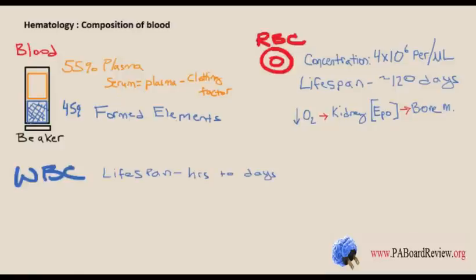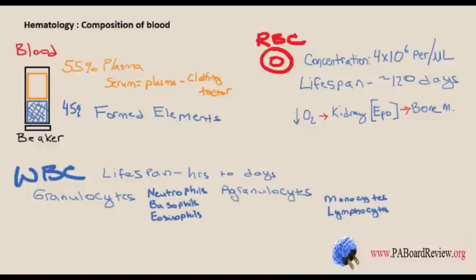White blood cells have a lifespan of hours to days. There are two types: granulocytes and agranulocytes. Granulocytes have vesicles containing enzymes or other chemicals; agranulocytes are those cells without the vesicles. The concentration is about 5,000 to 7,000 per cubic millimeter. Neutrophils are the most numerous and are phagocytic. Basophils contain vesicles with histamines and cause inflammation like mast cells. Eosinophils are associated with allergy and parasitic infections. Monocytes circulate until they migrate to tissue as phagocytes, and lymphocytes are immune cells.